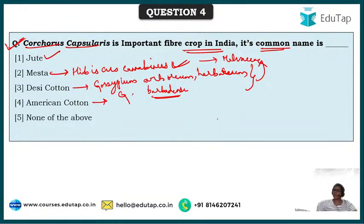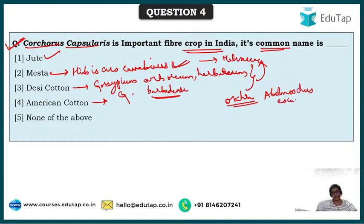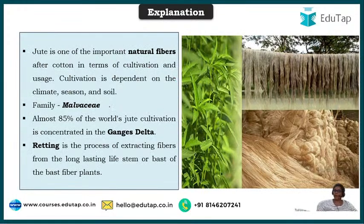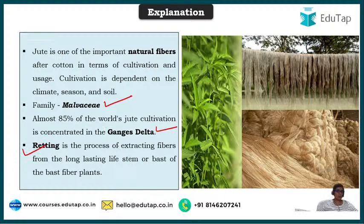One more important vegetable that belongs to family Malvaceae is Okra — its scientific name is Abelmoschus esculentus. Though cotton, okra, and mesta are widely different in what they produce, they all belong to the same family. Jute is one of the most important natural fibers in India after cotton, family Malvaceae. 85% of the world's jute cultivation is concentrated in the Ganges Delta, especially West Bengal. Retting is the process used to extract fibers from jute plants.